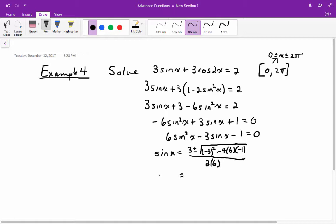So this ends up being sine of x equals 3 plus or minus the square root of 9 plus 24, which is 33, all divided by 12.